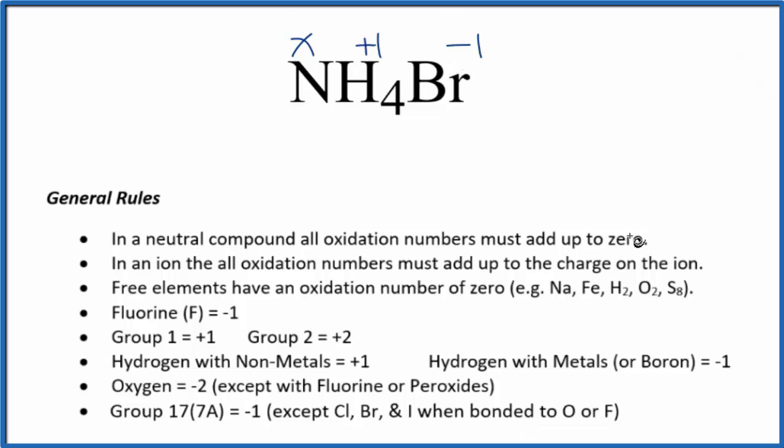All of this will equal zero. So we could just say X plus one times four, we have four hydrogens, minus one equals zero.